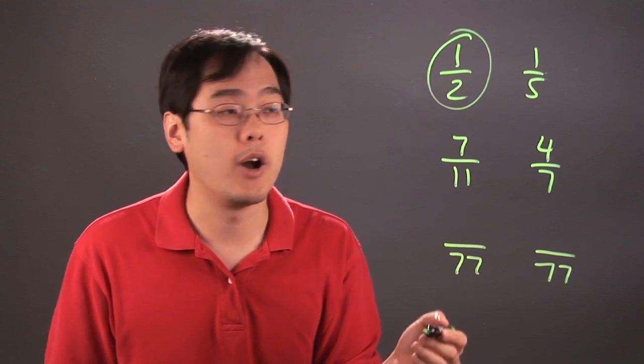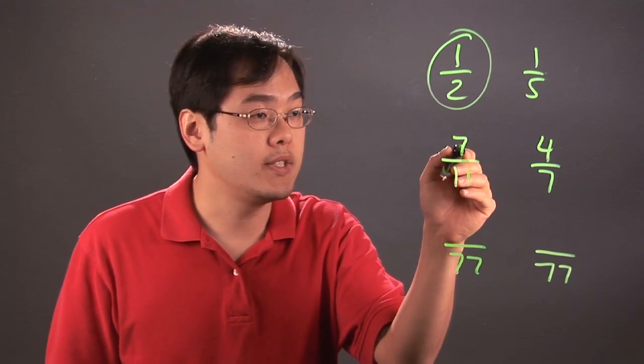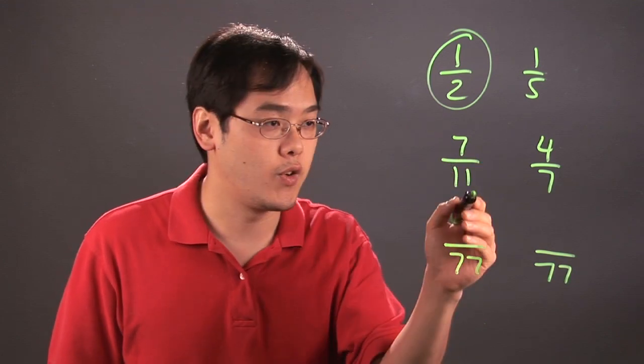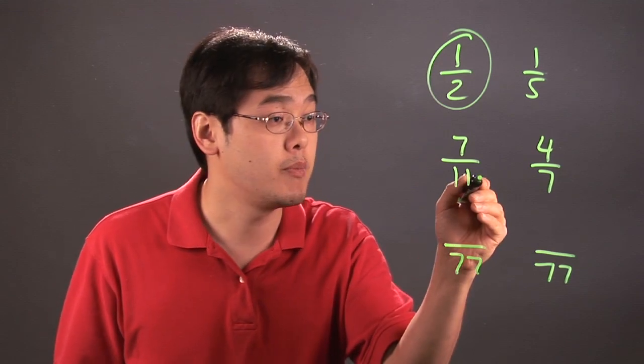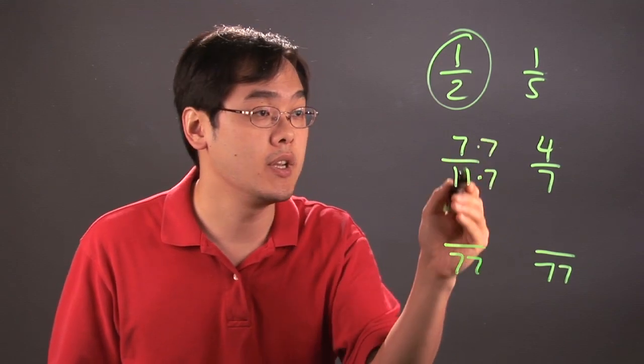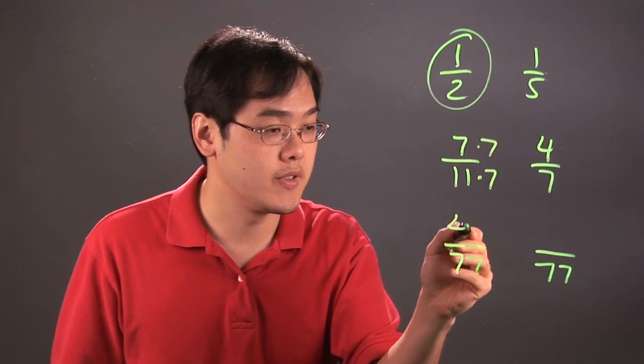And then what you want to do after that is think about what's the equivalent fractions of these. So, for example, 11 times what is 77? Well, that's 7 times. So you're going to multiply the top and the bottom by 7, so 7 times 7 is going to give us 49.